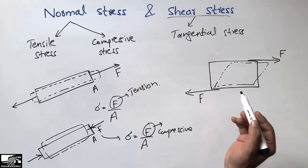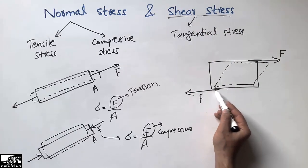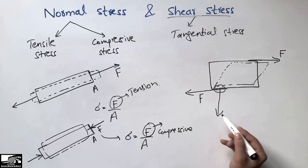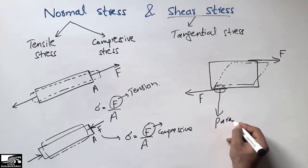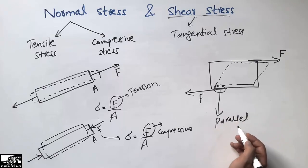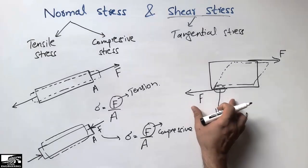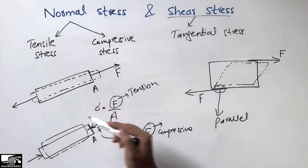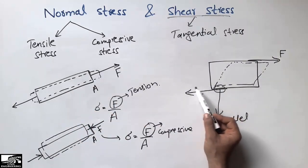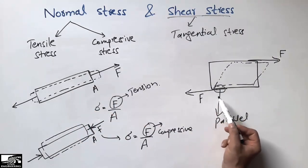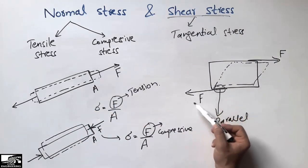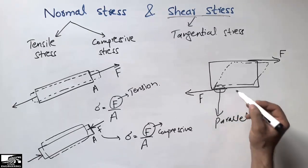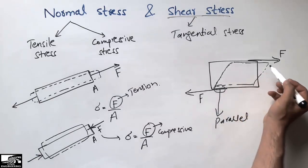The stress created in the object is known as shear stress. In this case, the force is not applied perpendicular to the surface but parallel to the surface — these two surfaces are parallel. That is why this type of stress is called shear stress, unlike normal stress where the force is perpendicular. Here the force is parallel to the surface, and the body will slide rather than compress or stretch.